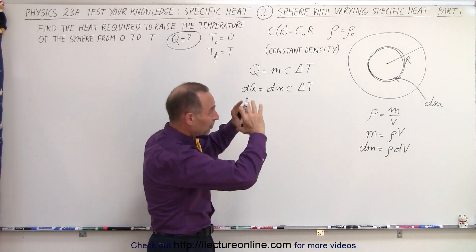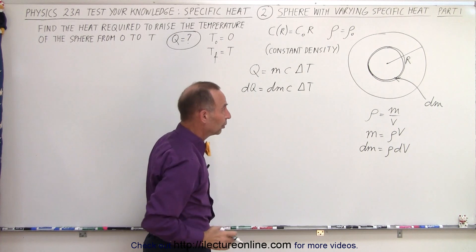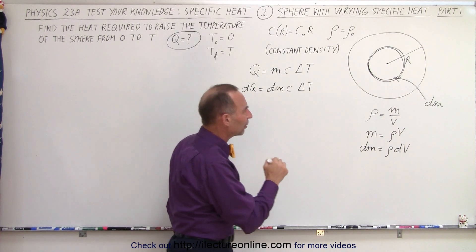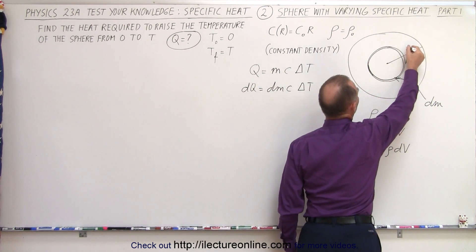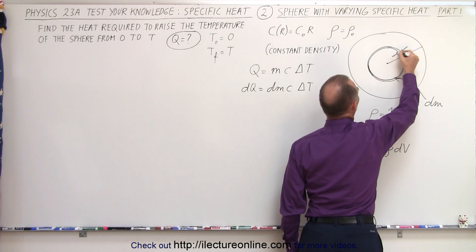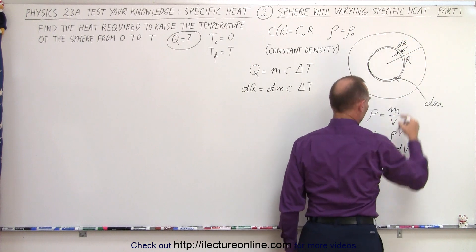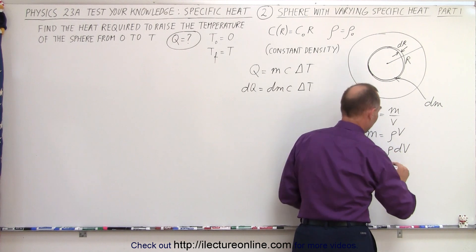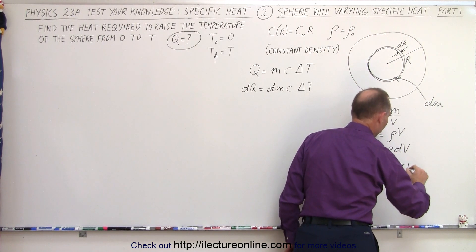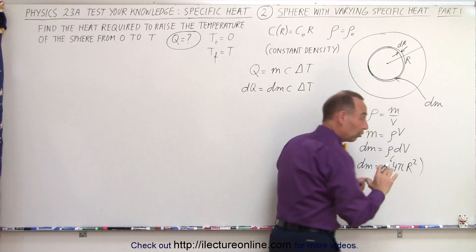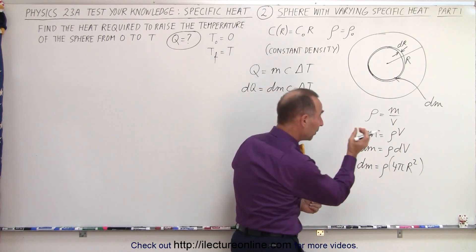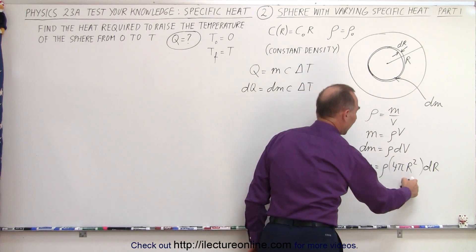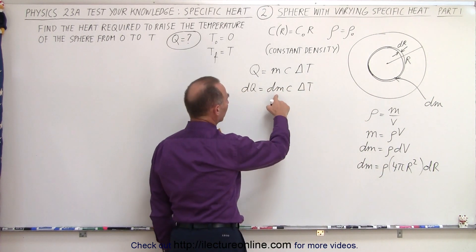And that volume element will be the volume of that spherical shell. So, how do we do that? The volume then would be the surface area times the thickness, and the thickness of that shell would be a small dr, which means that the dm can now be expressed as the density times the surface area, which would be 4 pi r squared, because that's the surface area of the sphere multiplied times the thickness, which is dr. And now we have a relationship between dm and the radius.